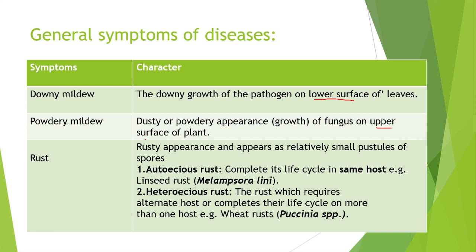Third is rust: rusty appearance and small pustules appear on plant parts. Rust is of two types — autoecious, where the entire life cycle is completed on a single host, and heteroecious, where the life cycle is completed on more than one host. Example of autoecious rust is flax seed rust; heteroecious rust example is wheat rust, which has two hosts: wheat plant and Berberis species.